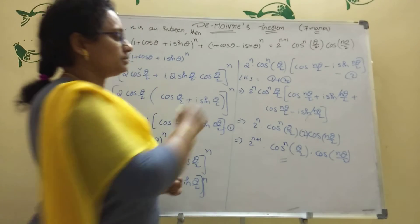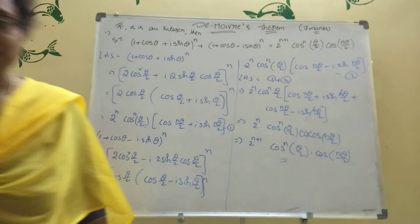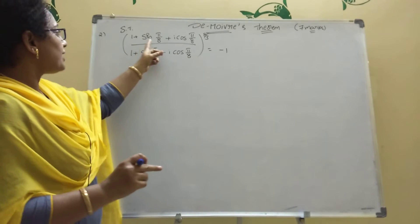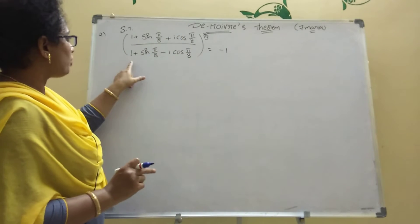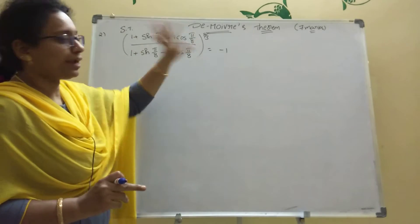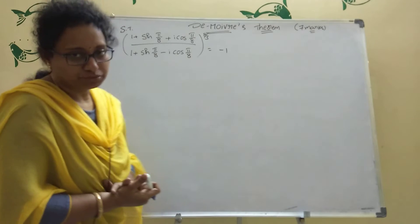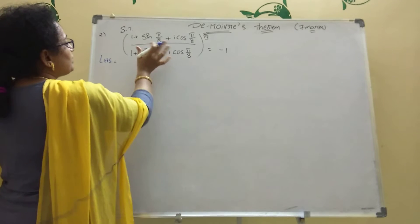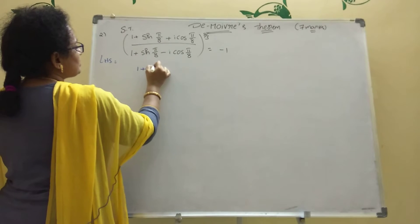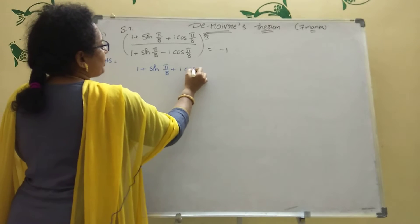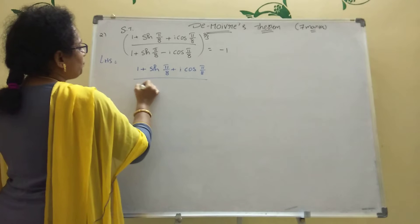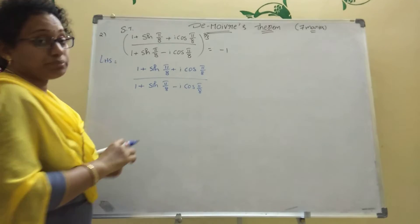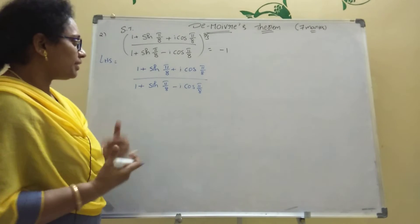That is our answer — easy. Now the second problem: prove that [(1 + sin(π/8) + i·cos(π/8)) / (1 + sin(π/8) − i·cos(π/8))]^(8/3) = −1. The actual formula is cosθ + i·sinθ, but here sine and cosine positions are interchanged, so we need to convert using complementary angles.